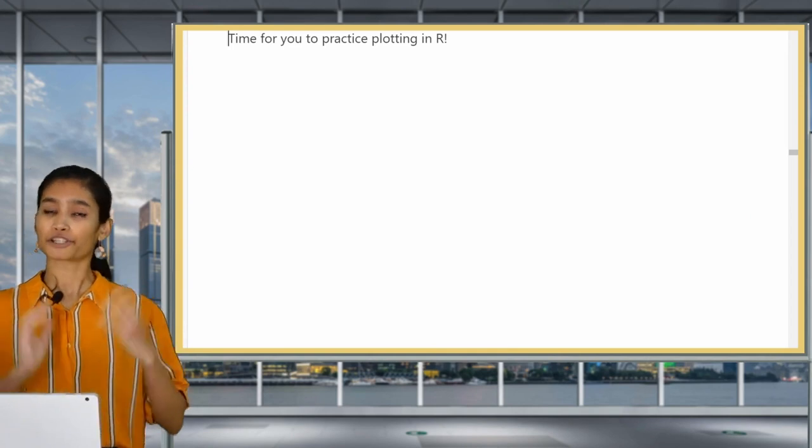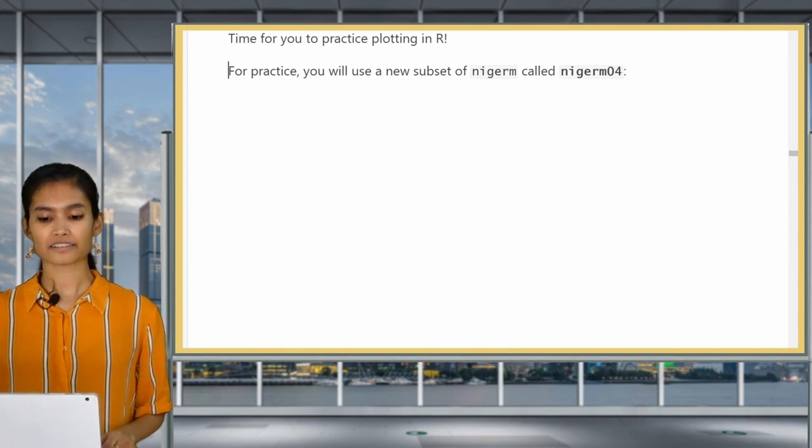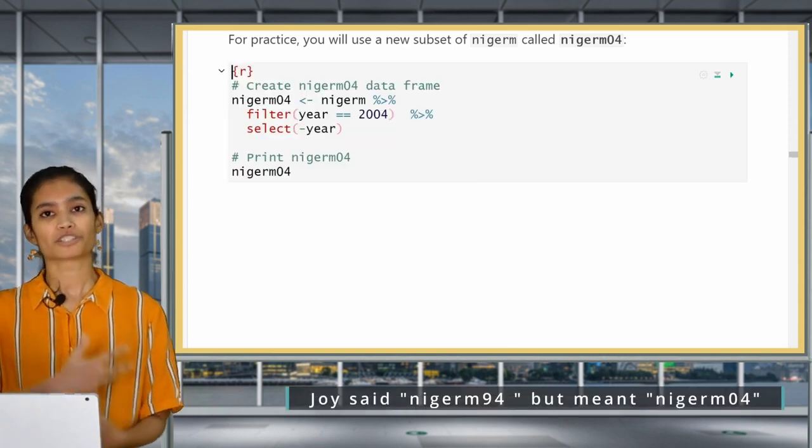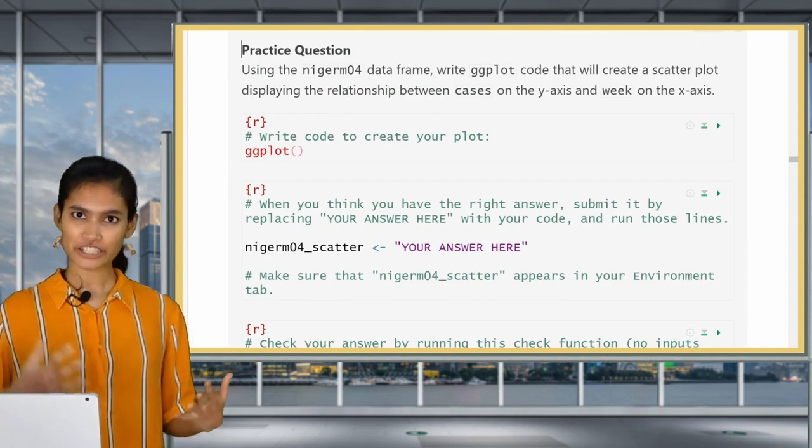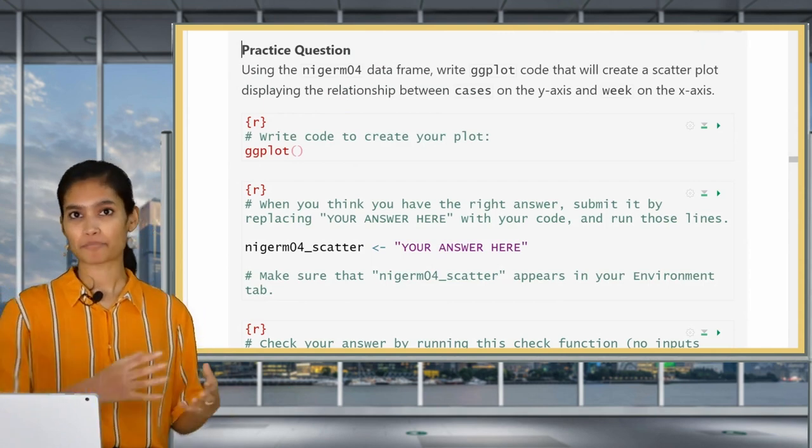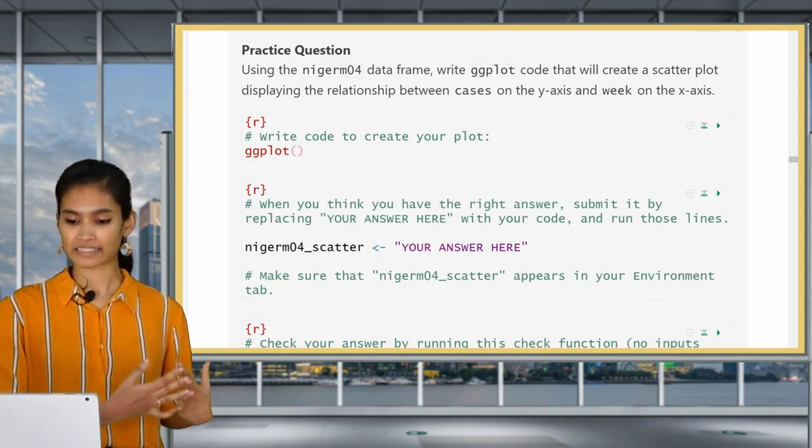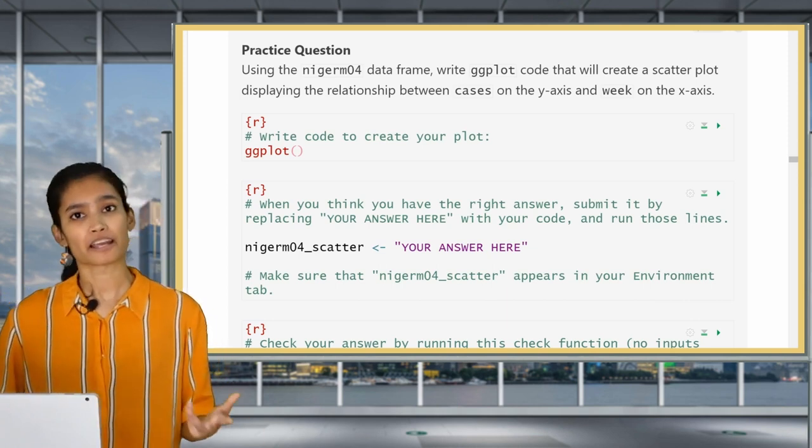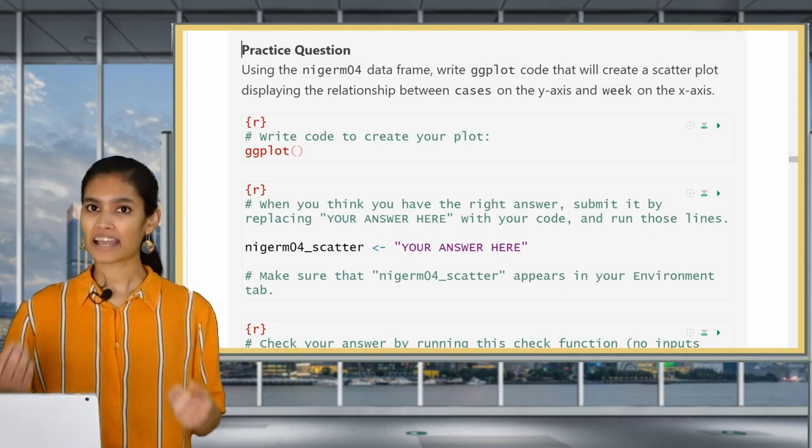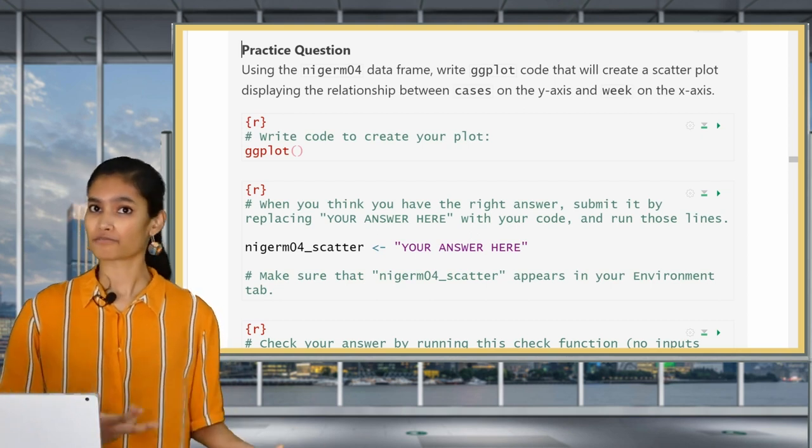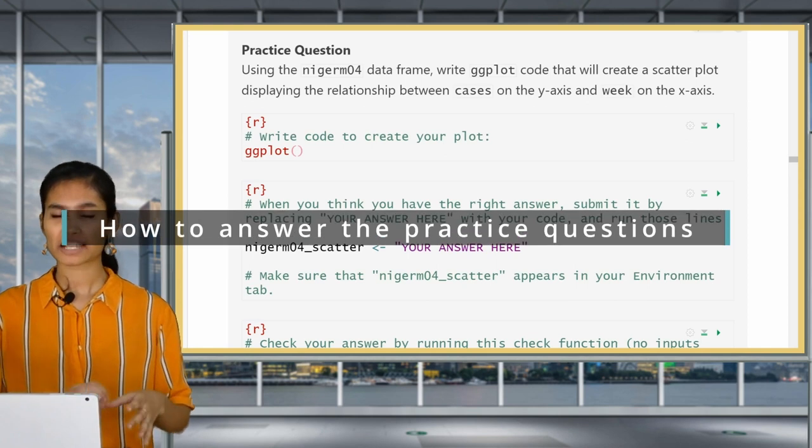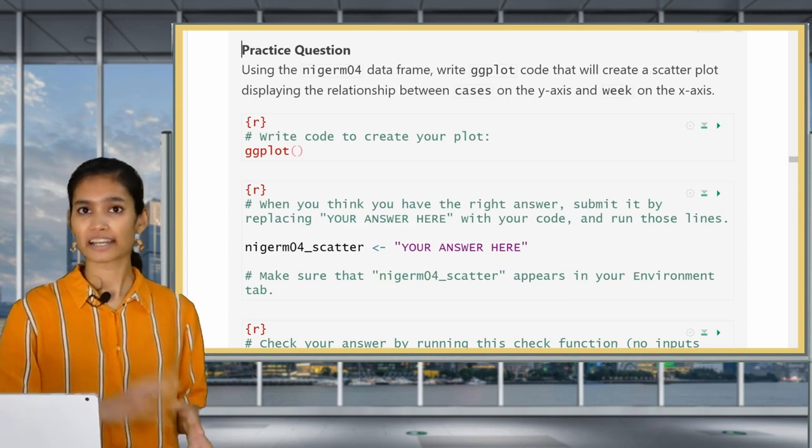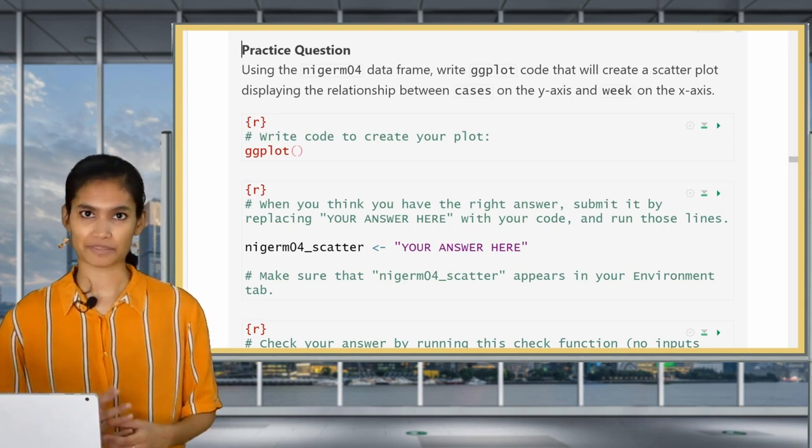So now it's time for you to practice plotting in R. For practice questions in this lesson, you won't be using Niger M96 anymore, but we'll create a new subset called Niger M04 which only contains data from 2004. For this practice question, we want you to use Niger M04 and create the same scatter plot that we just created with Niger M96. You want to plot cases on the y-axis and week on the x-axis. Plotting with a different data frame will also allow you to look at those patterns and see if the same seasonal transmission holds true for 2004 as it did for 1996.